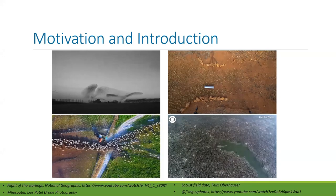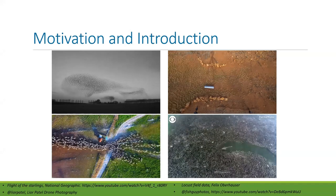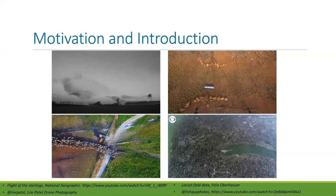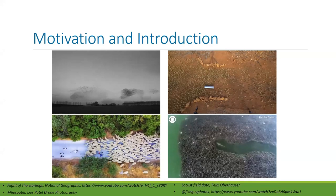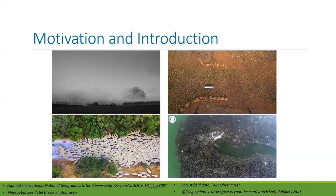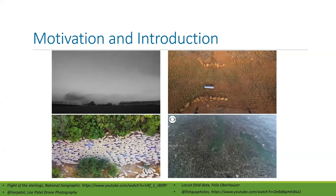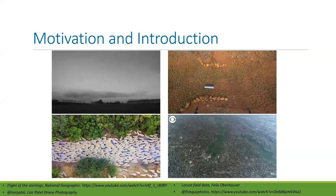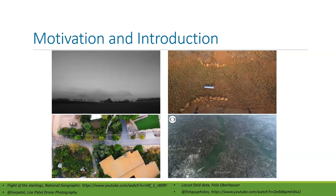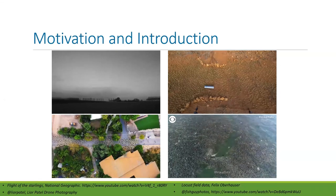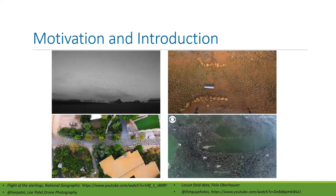Here you can see four different types of animal behavior. We have starlings in the top left — a murmuration of starlings, thousands and thousands of birds. In the top right we have marching locusts; this is taken in Kenya a few years ago.